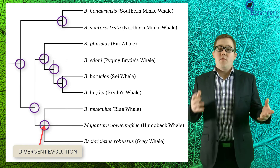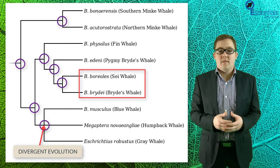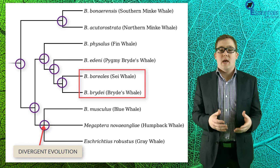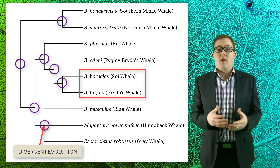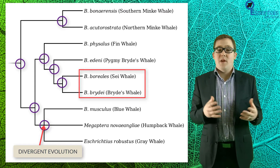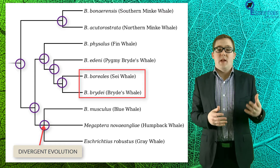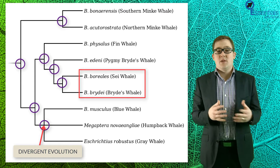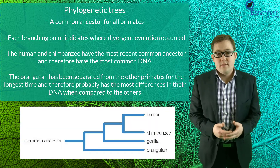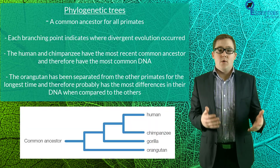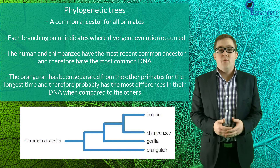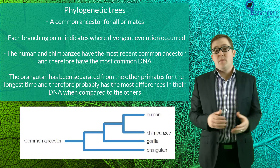As we've already discussed, species with common ancestors closer to the current date are seen to be more closely related, and will have fewer differences in their DNA, as there's been less time for their DNA to mutate independently. A useful tool used by scientists studying these relationships are phylogenetic trees, and taking a look at the following example, we can see how they can be used.